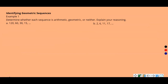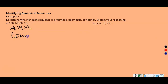Example one: identifying geometric sequences. Determine whether each sequence is arithmetic, geometric, or neither. Looking at part A: 120, 60, 30, 15. So 60 is half of 120, 30 is half of 60, 15 is half of 30. You can write it as 120 times one-half, times one-half, times one-half. Since those multipliers are all the same, we have a common ratio of one-half. Since it has a common ratio, this sequence is geometric.